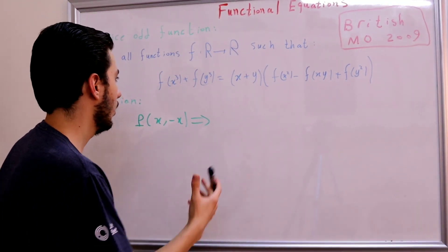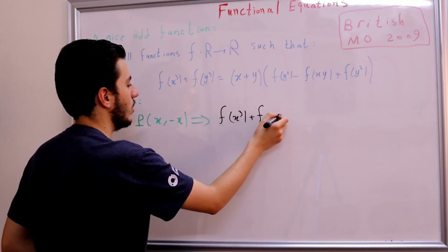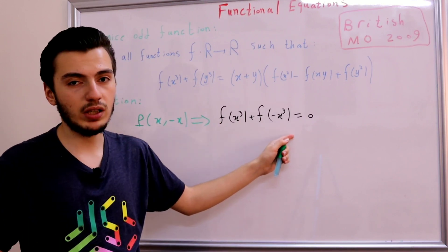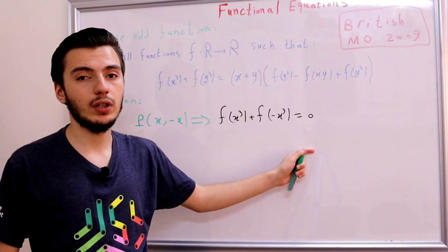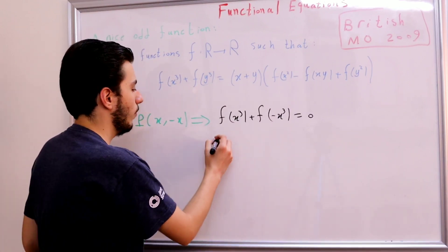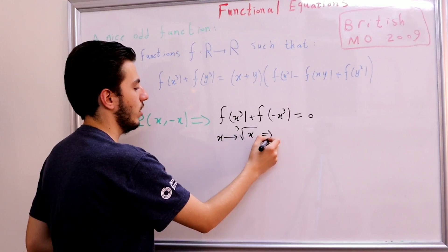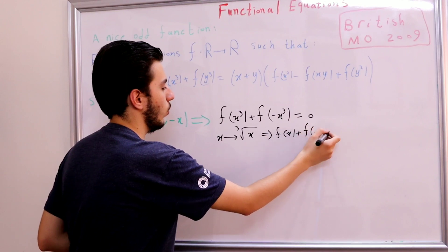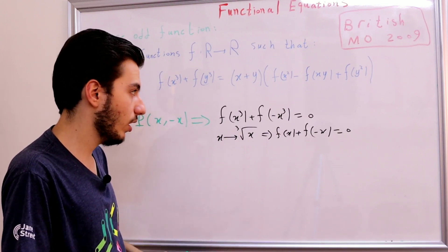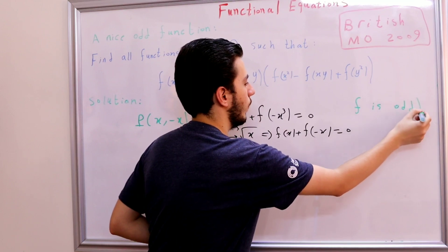With the substitution y = -x, the right-hand side is 0, and we get f(x³) + f(-x³) = 0. This means our function f is odd. To confirm: substituting t = x³ gives f(t) + f(-t) = 0, so f is indeed odd.